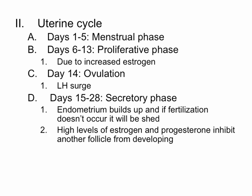High levels of estrogen and progesterone at this time inhibit another follicle from developing, because humans are normally going to have one offspring versus a litter.